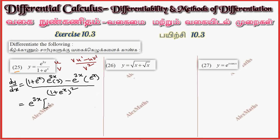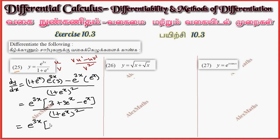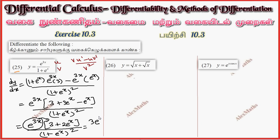Where e power x whole divided by 1 plus e power x whole square. In the numerator we have e power 3x remaining, with 3 plus 3e power x, that is minus e power x as it is, whole divided by 1 plus e power x whole square. So we get e power 3x into 3 plus 2e power x, whole divided by denominator 1 plus e power x whole square.